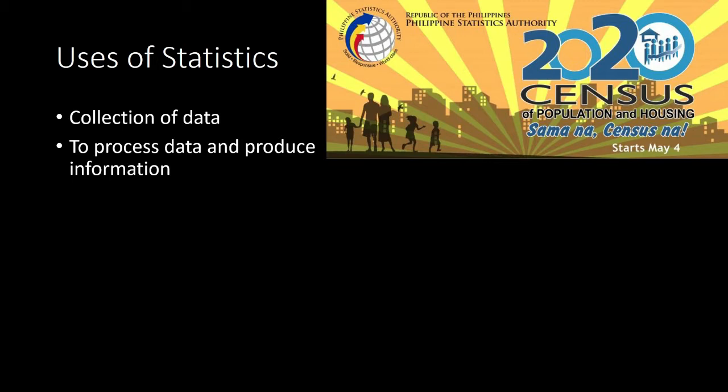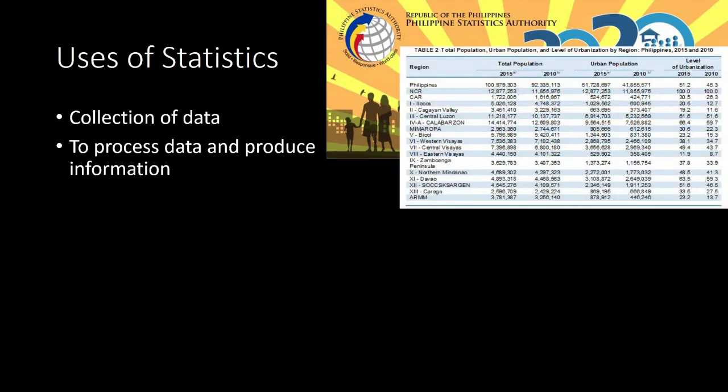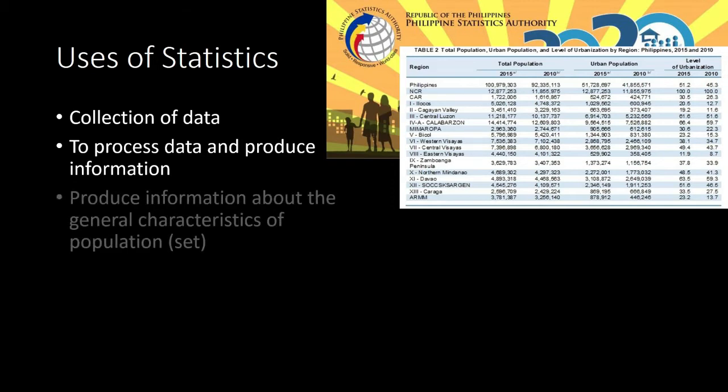By processing raw data, they produce useful information — such as the size of the population per region per year, or the population from urban areas versus rural areas. This is an example of information that arose after processing a set of data, and the kind of data that helps produce this is collected in a census.